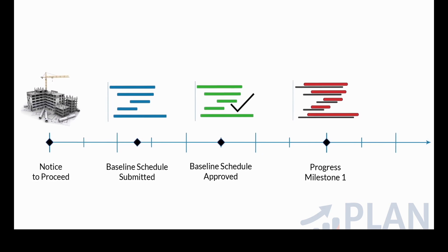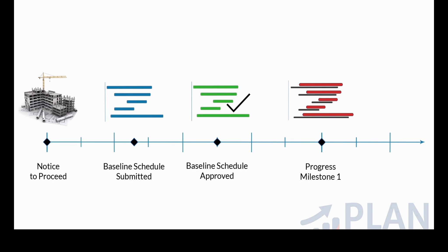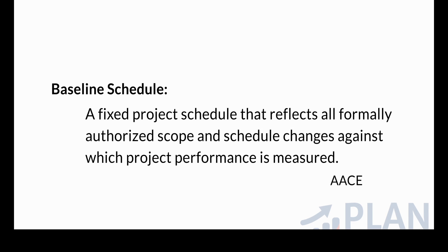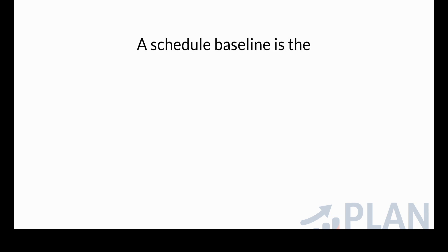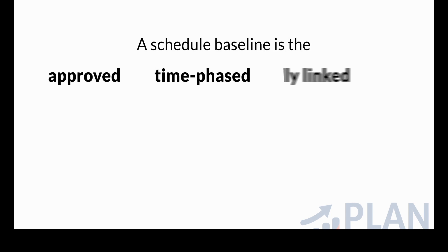But what is a baseline? Let us go to the ABC definition of the baseline schedule. A baseline schedule is a fixed project schedule that reflects all formally authorized scope and schedule changes against which the project performance is measured. In simpler words, a schedule baseline is the approved, time-phased, and logically linked activities — a detailed interpretation of the project execution plan.